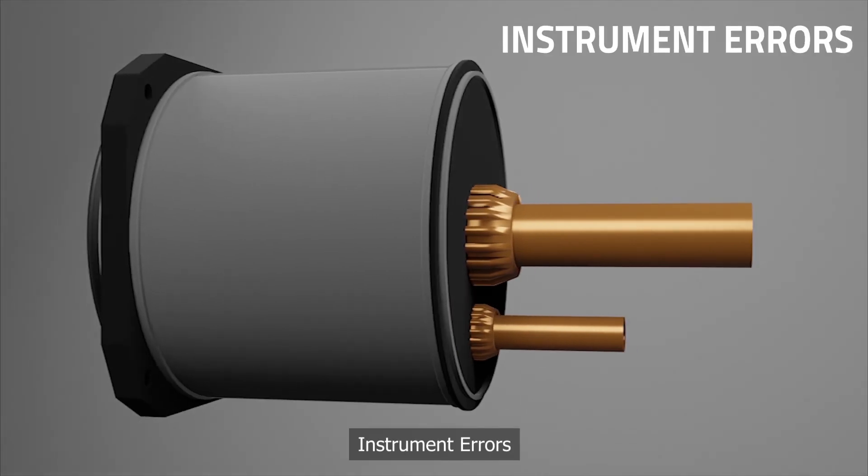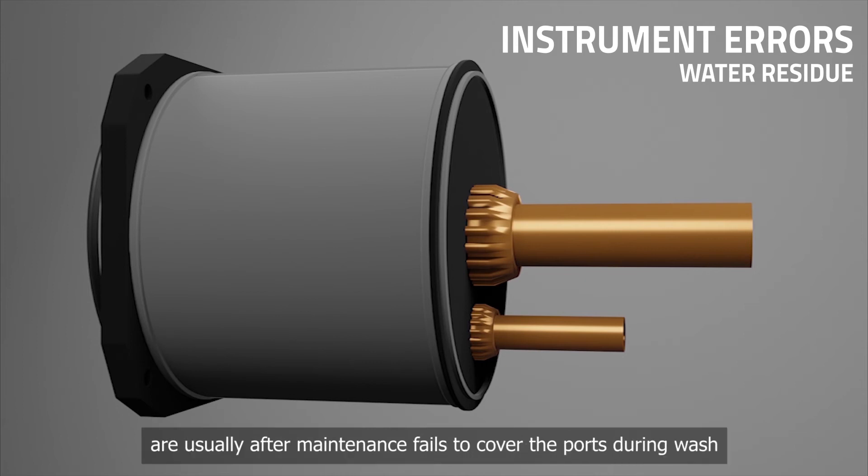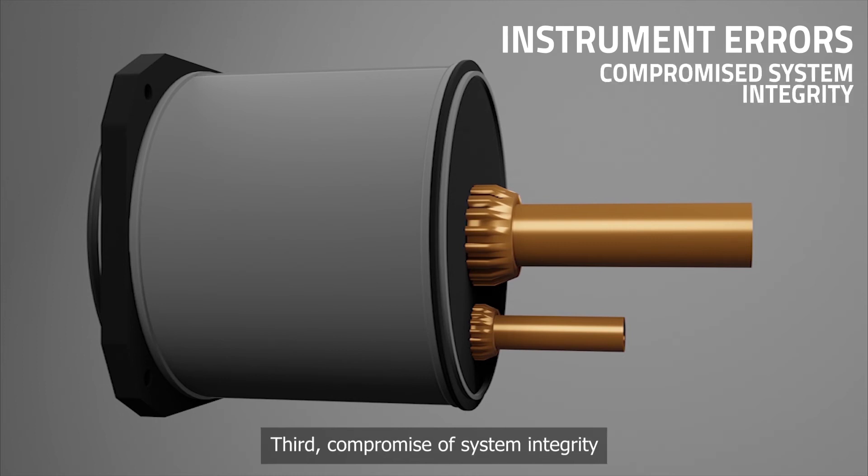Instrument errors. Pitot static failures typically come in three varieties. First, icing over the pitot or static ports. Second, trapped water in the lines, usually after maintenance fails to cover the ports during a wash. Third, compromise of system integrity. Leaks due to holes or loose fittings. Kinks in the lines, obstructions or blockages, taped or covered ports.